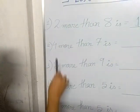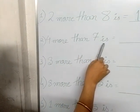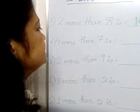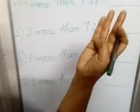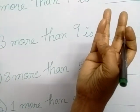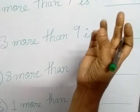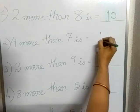Next is 4 more than 7 is. 4 more than 7 means 7 plus 4. 7, 8, 9, 10, 11. You write here 11.